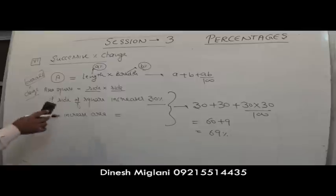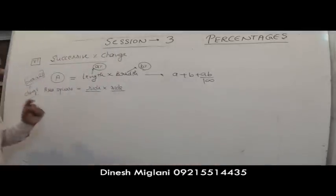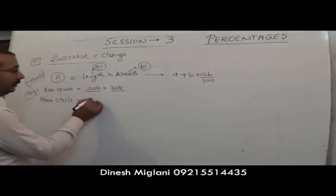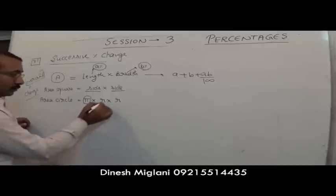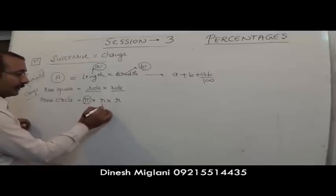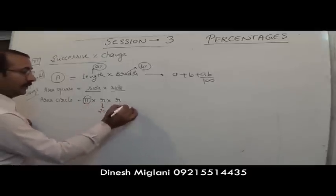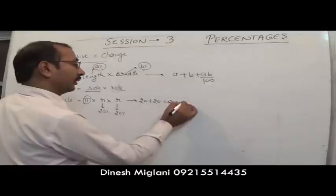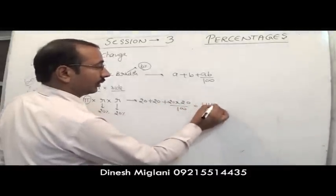Similarly, for the area of a circle (π × r × r), π is constant. If radius increases by 20%, overall percentage change = 20 + 20 + (20 × 20)/100 = 40 + 4 = 44%.